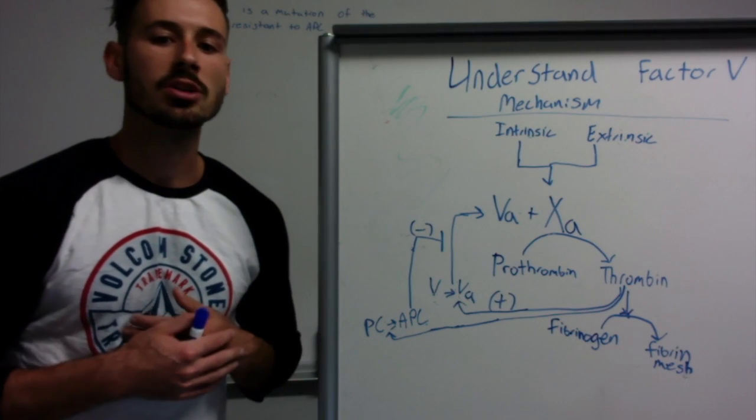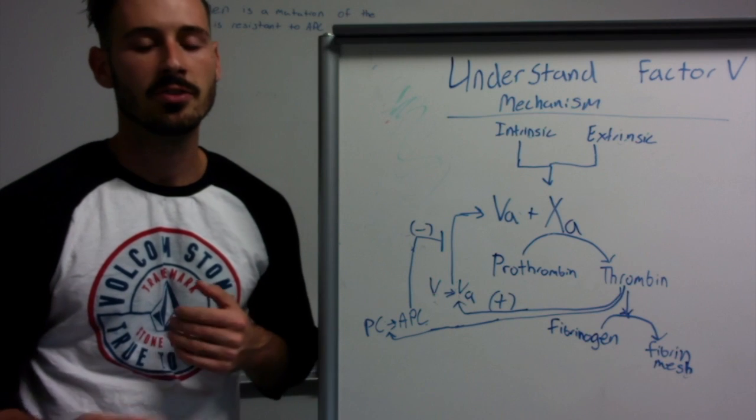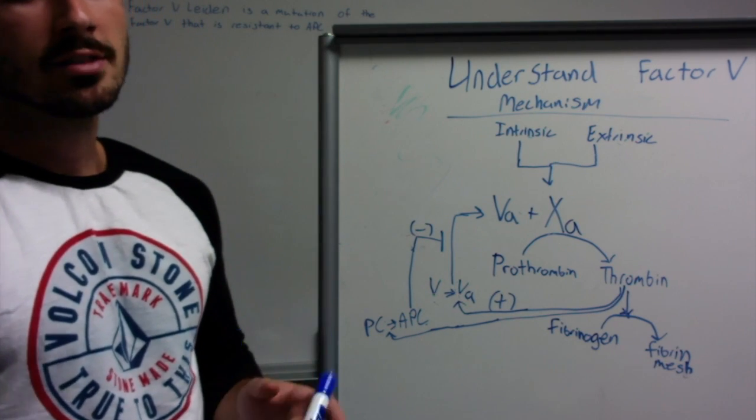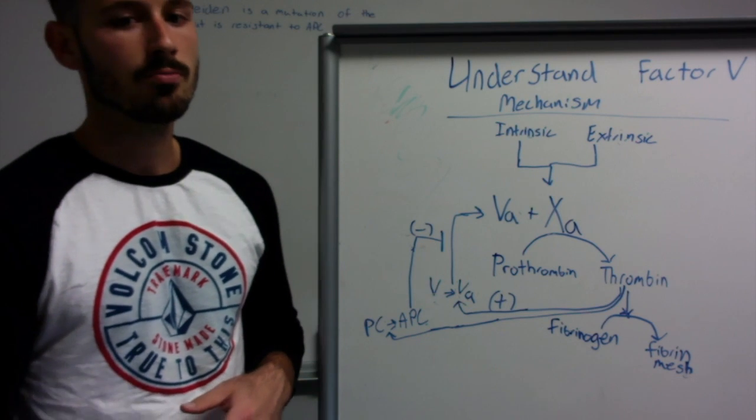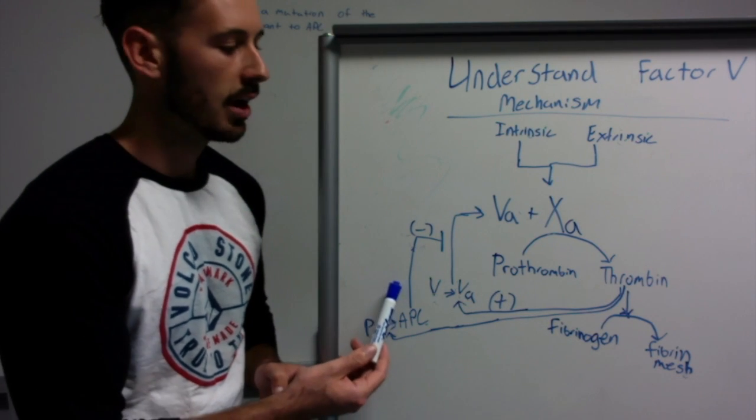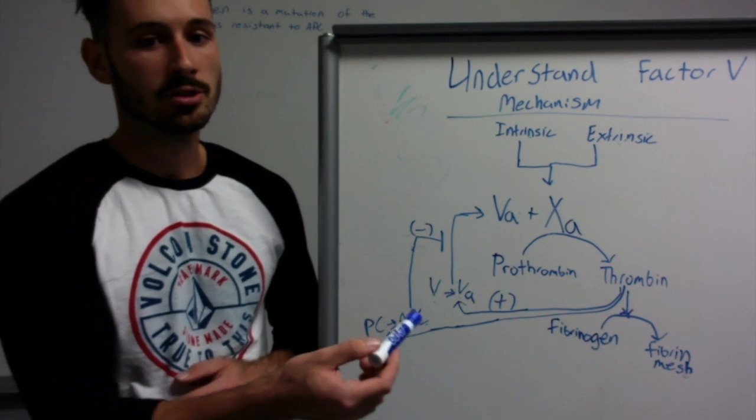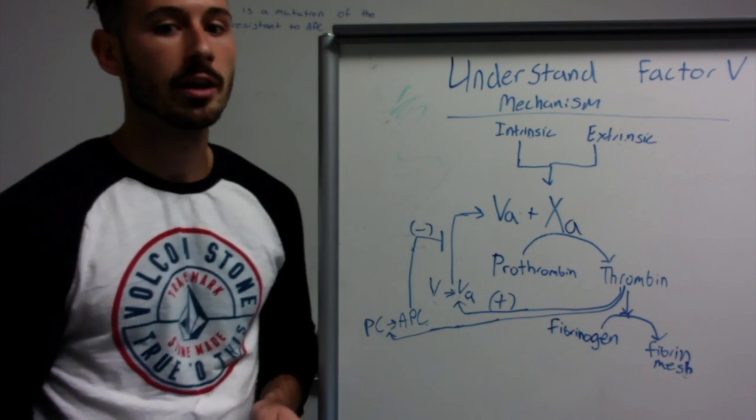Okay, so now that we've talked about Factor V and Factor V Leiden and some of the general aspects of that, let's take a look at how the mutation on Factor V that we see in Factor V Leiden causes the prolonged clotting effect.